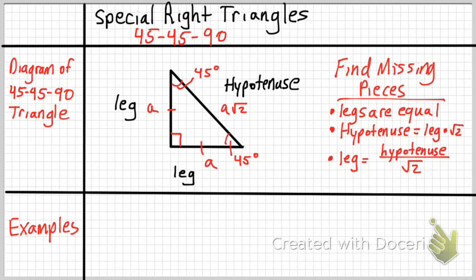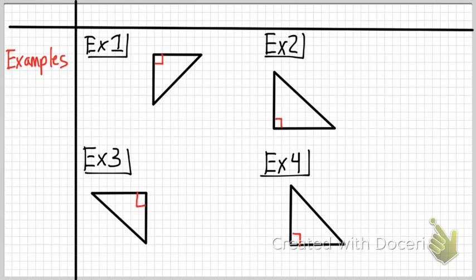Now we're going to do a couple of examples. For my first example, this triangle has a 45-degree angle, the leg here is 6, and I'm looking for the other leg and the hypotenuse. Since leg equals leg, x is equal to 6. Then y will be 6 times the square root of 2 because it's the hypotenuse, so y is equal to 6√2.